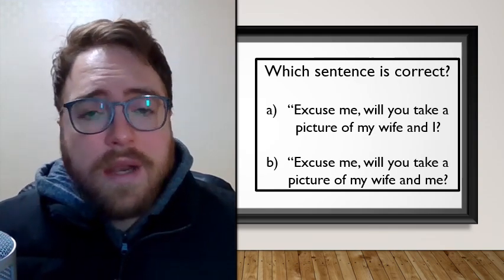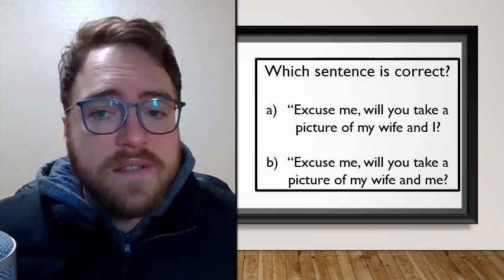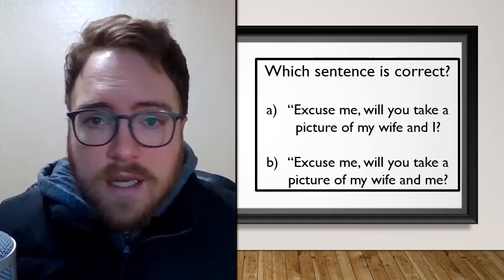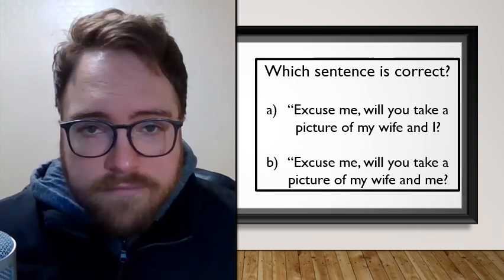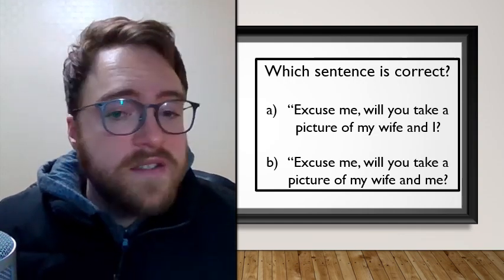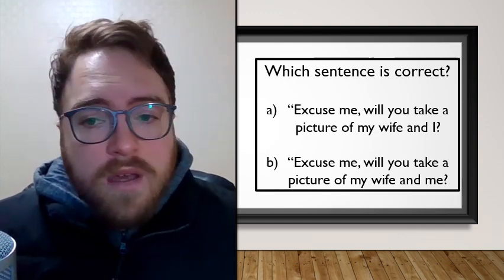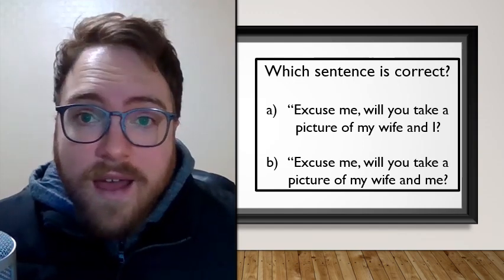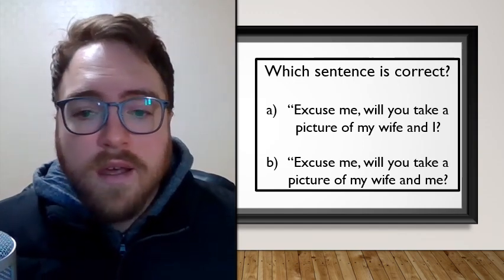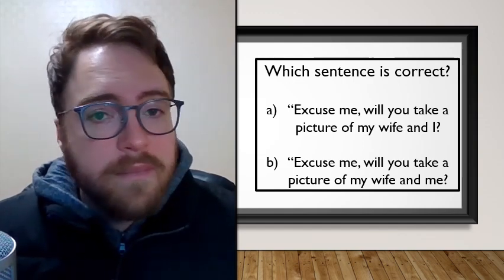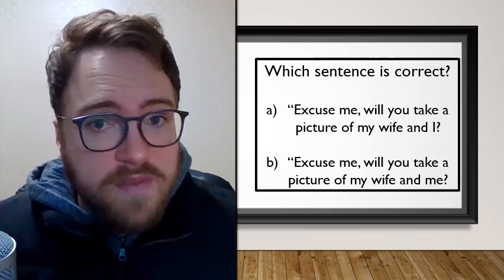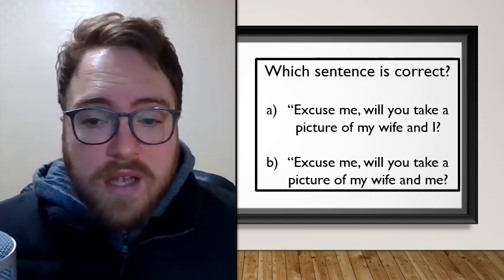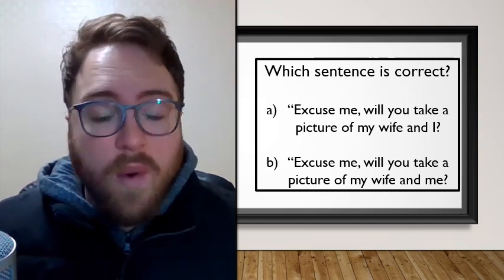Again, which sentence do you think is correct? A: 'Excuse me, will you take a picture of my wife and I?' Or B: 'Excuse me, will you take a picture of my wife and me?'